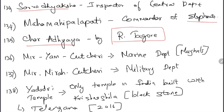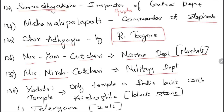Chaturdhyaya was a book written by Rabindranath Tagore. Note: sarvadhyaksha (inspector of central department) is a Gupta-period exception to the Mauryan '-adhyaksha' rule. Mir Iam Kacheri is the marine department of the Mughals; Mir Mira Kacheri is the military department — remember: yam (vegetable) floating in the ocean = marine; Mira with a gun = military.